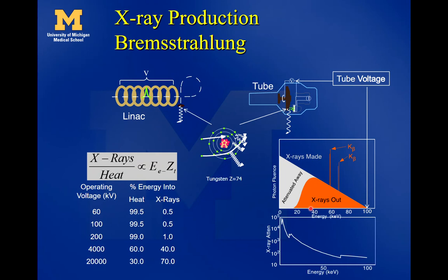X-rays are produced using Bremsstrahlung. Bremsstrahlung is when high-energy electrons collide into a metal target and produce heat or x-rays. In this diagram, a tiny pulse of electrons goes down through the linac. The voltage is essentially the whole tube of the linac. The beam comes down, bends through 270 degrees, and hits maybe a copper target, where the electron beam stops and produces x-rays going forward.